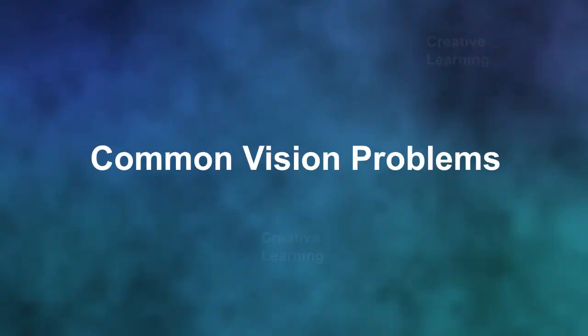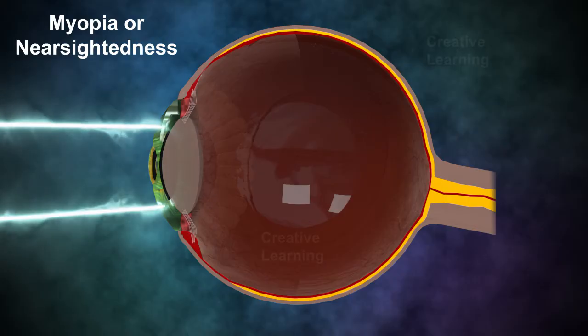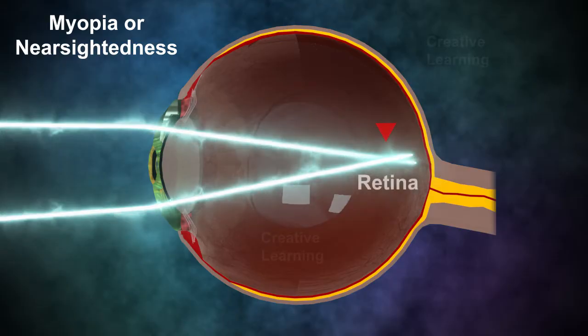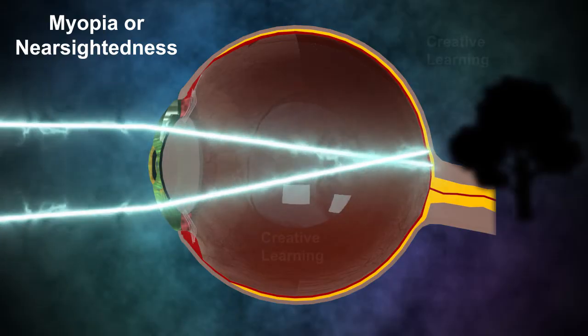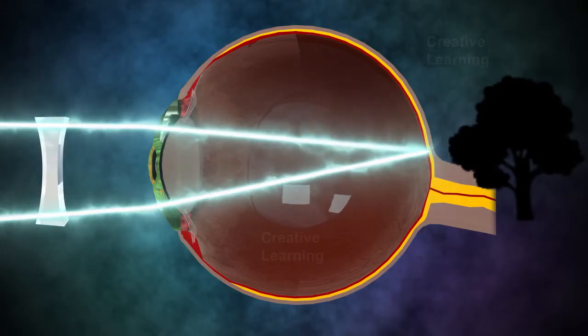Common vision problems: Myopia or near-sightedness is a visual abnormality in which the eye focuses the image of distant objects in front of the retina instead of on the retina, resulting in a blurred image. Myopia can be corrected by a concave lens.